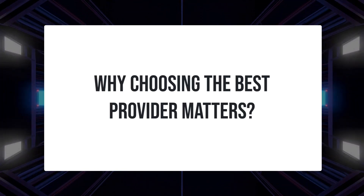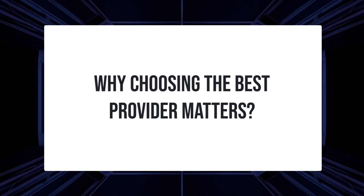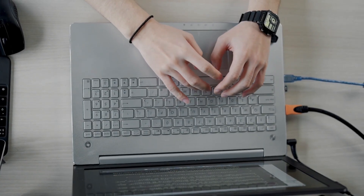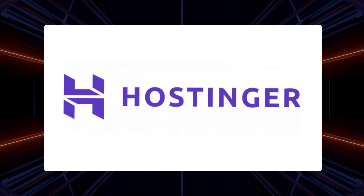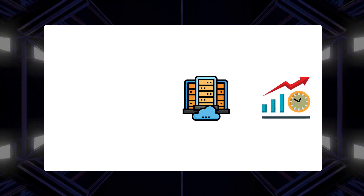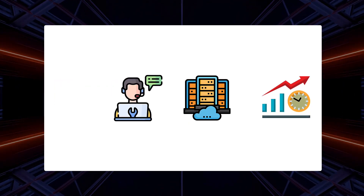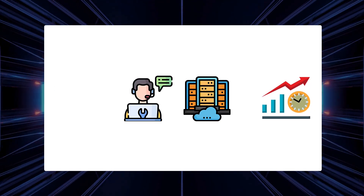Why choosing the right provider matters: not all VPS providers are created equal. You need one that offers reliability, good performance, excellent support, and fair pricing. After extensive research and personal experience, I want to introduce you to Hostinger. Hostinger has been in the hosting business since 2004, serving millions of customers worldwide. What sets them apart is a 99.9% uptime guarantee — your application stays online. They offer global data centers so you can choose a location close to your users for better performance, and 24/7 customer support because deployment issues don't follow business hours.